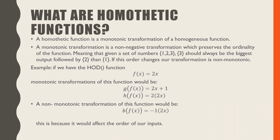So what are homothetic functions? A homothetic function is a monotonic transformation of a homogeneous function. A monotonic transformation is a non-negative transformation which preserves the ordinality of the function, meaning that given the set of numbers 1, 2, and 3, 3 should always be the biggest output followed by 2 and then 1. If this order changes, our transformation is non-monotonic.